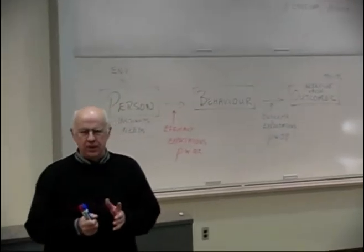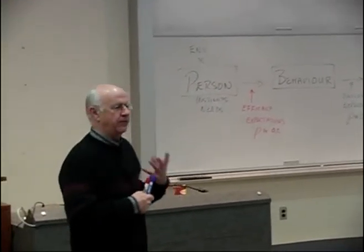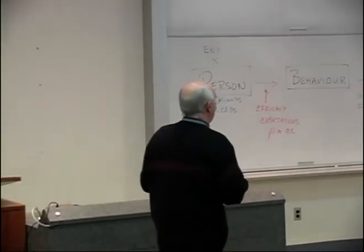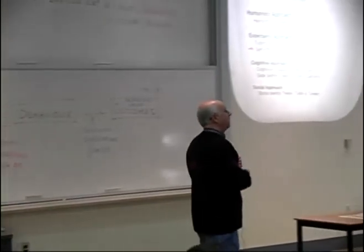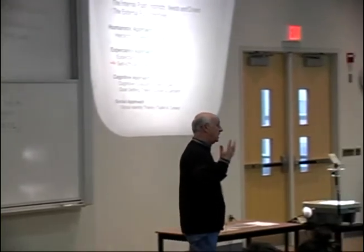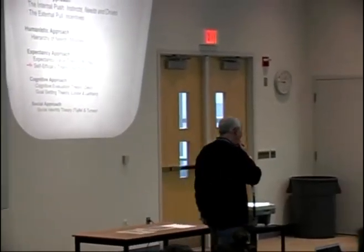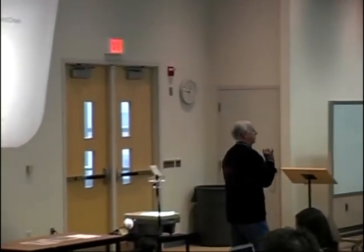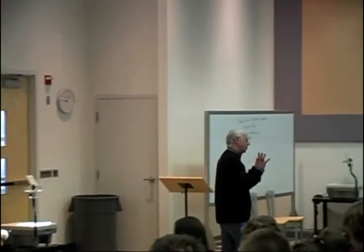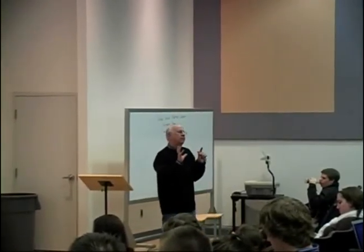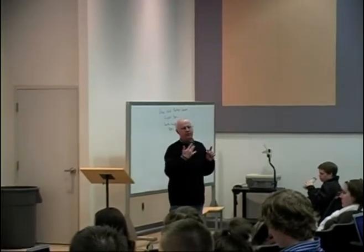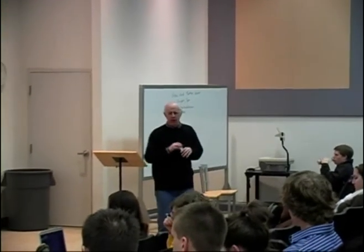And perhaps the most famous of the cognitive theories of human motivation is one that's called the cognitive evaluation theory by a chap by the name of Edward Deci. Now, it's a rather, I think, ill-chosen sort of title, because it's a little complex. But I trust at the end, you'll be able to see why he called it the cognitive evaluation theory.